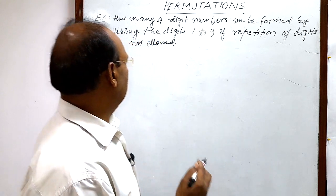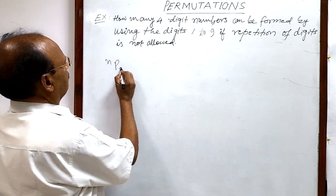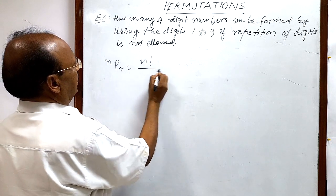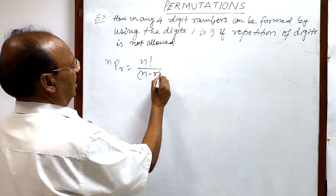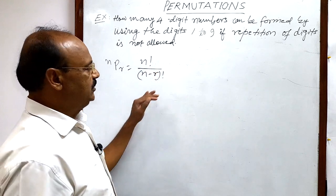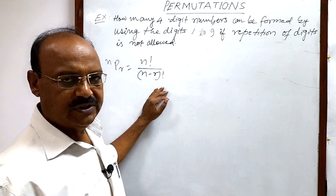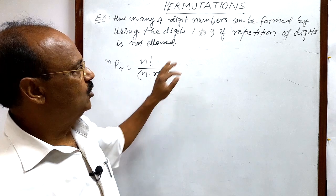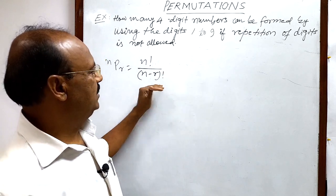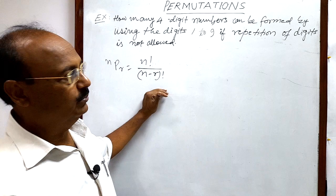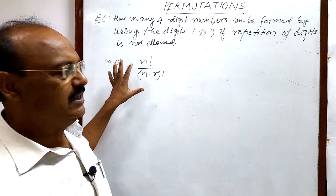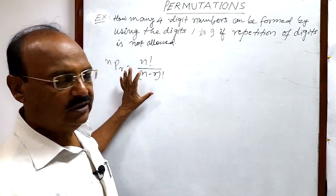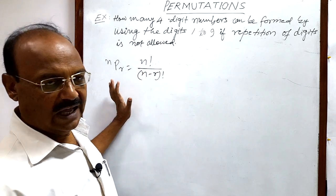Here we will use the formula nPr equals n factorial by n minus r factorial. We have used this formula several times in different videos of this topic permutations and discussed it in the introduction video also. So this is a very simple and basic formula for permutations, for arrangements.